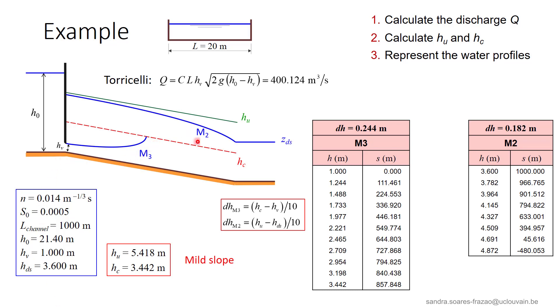and an M2 profile starting at the downstream end of the channel. The M3 profile is calculated with 10 delta h steps between hv and hc, and the M2 profile is calculated with 10 delta h steps between the downstream depth hdS and hn. The results are indicated in these two tables.